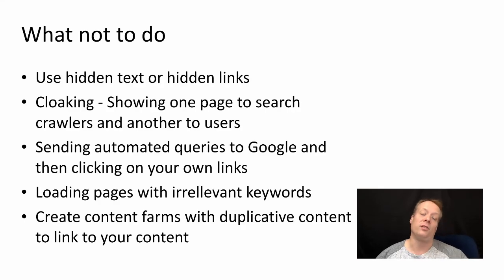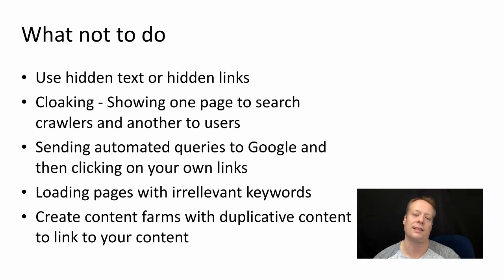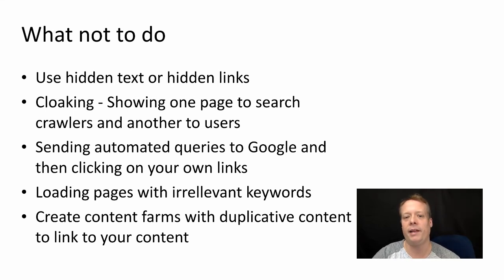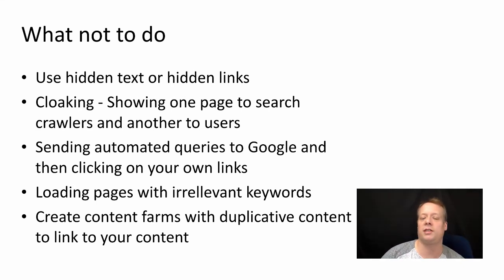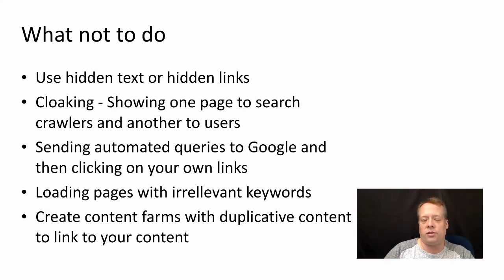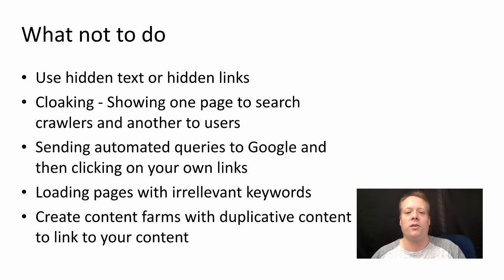Here's what not to do — the black hat SEO methods to avoid. You shouldn't use hidden text, such as making text the same color as the background — a robot will read it but a human won't see it. Hidden links work the same way. Cloaking means showing one page to search crawlers and a different one to users — for instance, showing a cleaner page to crawlers to appear trustworthy while showing users a page full of ads. Sending automated queries to Google and clicking your own links to spike rankings is also something to avoid.